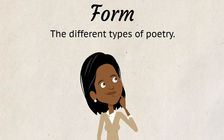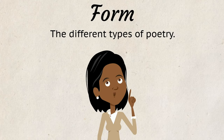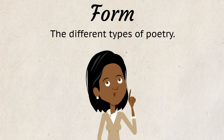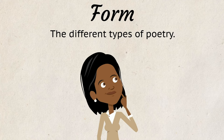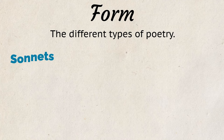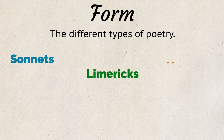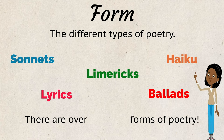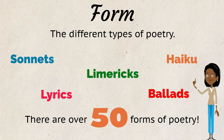Form means the different types of poetry. Some common forms of poetry are sonnets, limericks, haiku, lyrics, and ballads. There are over 50 forms of poetry.